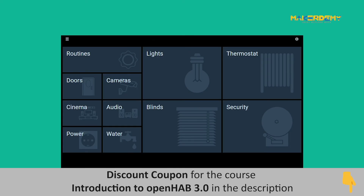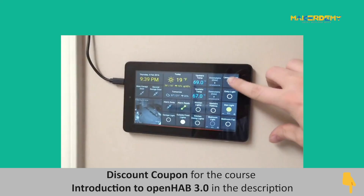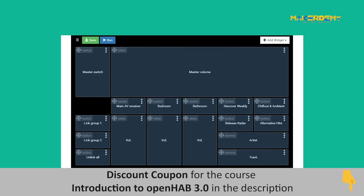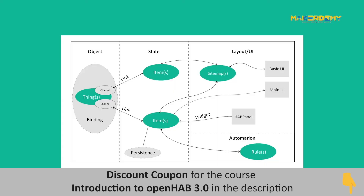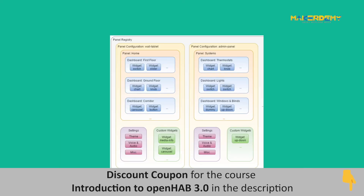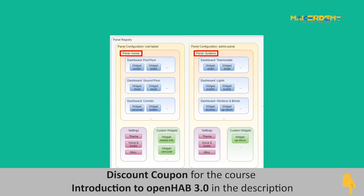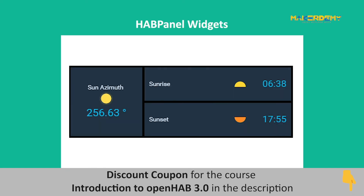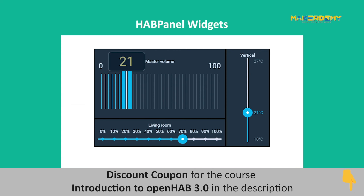HAB Panel is mainly designed for touch-based dashboards, especially for wall-mounted tablets common in smart homes. It is installed by default and can be configured easily in the UI itself, without configuration files. Unlike Basic UI, HAB Panel does not require sitemaps and can be set up once items are defined. HAB Panel has its own entities or building blocks: the panel registry is the central storage for a particular OpenHAB instance, consisting of several panel configurations representing different devices running HAB Panel, such as a wall tablet and an administrator tablet. Panels are a set of dashboards presented to users, and HAB Panel interacts with the end user through different widgets contained within dashboards.